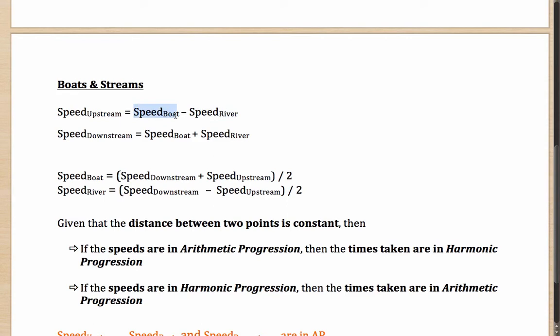Well, let's say if the boat in still water can move at 10 km per hour, it will move in one direction, let's say from left to right at 10 km per hour. Whereas the river will push back with its own flow speed. Let's say that is 2 km per hour.